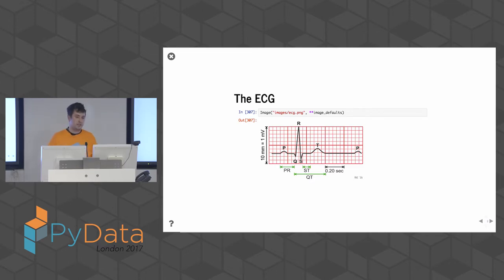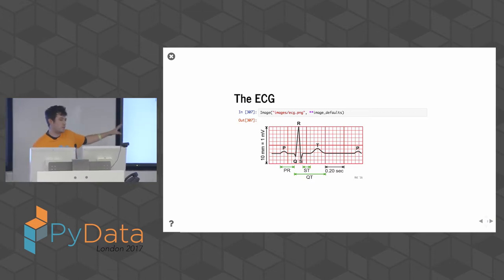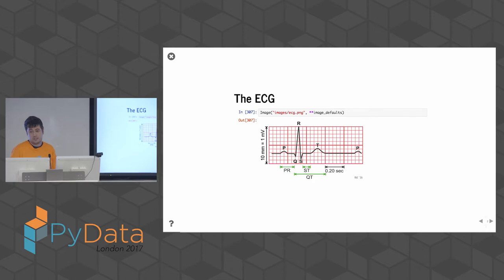The ECG is a famous waveform — if you ever see a medical company using it on their logo, they probably use the ECG. It's a really nice signal. If you're looking to dip your toes in physiological data, the ECG offers a lot. We refer to the bits of the ECG with the markers P, Q, R, S, T — named that way simply from calculus, marking each peak along the waveform.